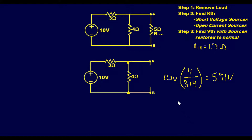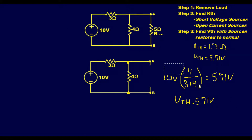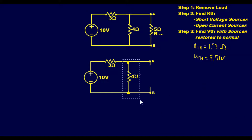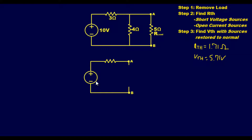So V_thevenin equals 5.71 volts. Cleaning up the circuit, the Thevenin equivalent final answer is a voltage source of 5.71 volts and an R_thevenin of 1.71 ohms in series.